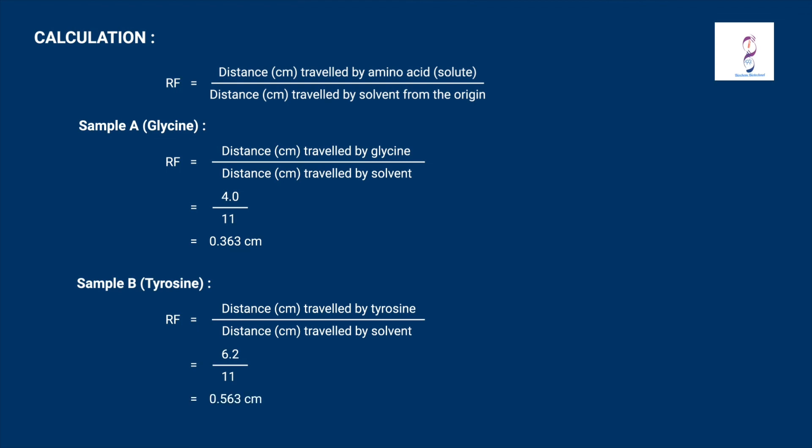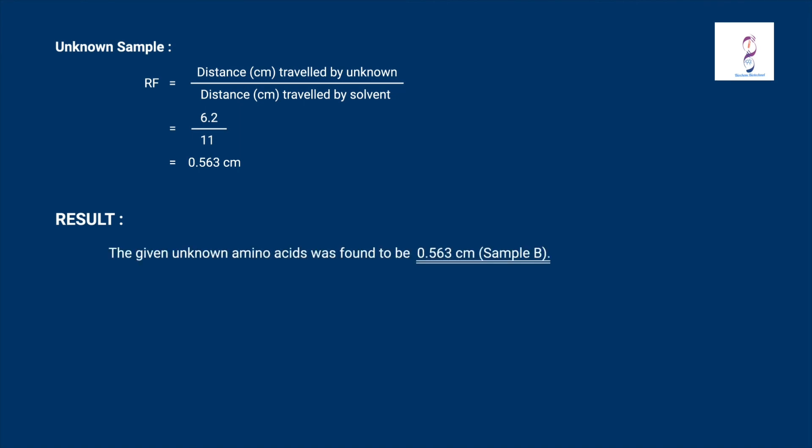Sample B is tyrosine at 0.563, and the unknown sample has an Rf value similar to tyrosine at 0.563. Therefore, the unknown sample is identified as tyrosine.